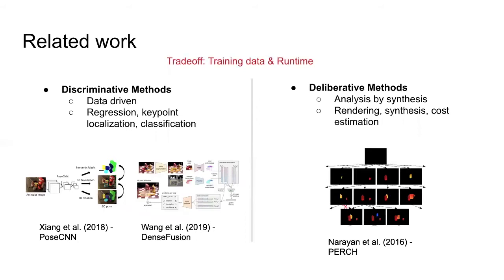Discriminative methods are very fast. However, these methods require a large set of training data and extensive annotation of ground truth poses. Deliberative approaches don't need large datasets, but they tend to be slow.